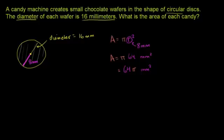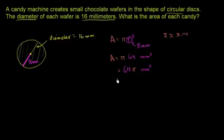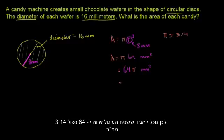So the most rough approximate value that tends to be used is saying that π, a very rough approximation, is equal to 3.14. So in that case, we could say that this is going to be equal to 64 times 3.14 square millimeters.